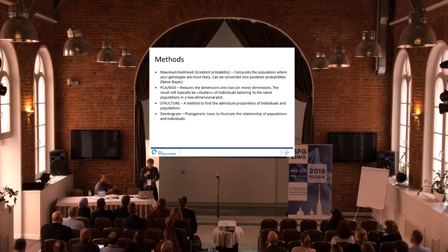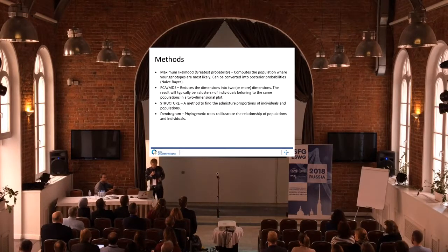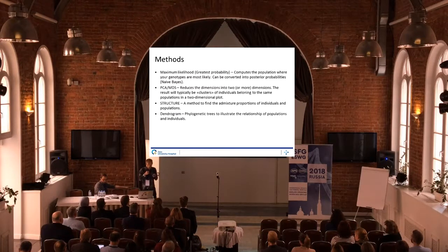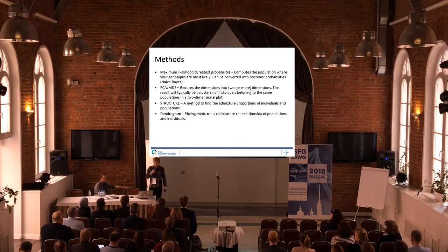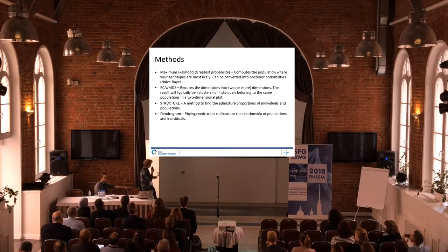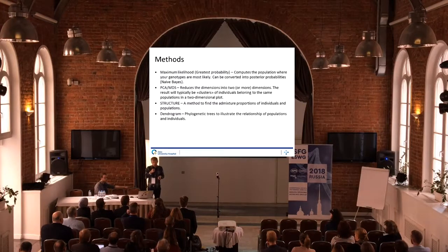The second method is called PCA or MDS — we actually used the MDS method. These are methods to reduce the genotype's dimensionality, which can be like 500,000 markers, and reduce it to two dimensions to see how populations cluster. The third method is called STRUCTURE, which can find the admixture proportion of each individual given reference data sets.